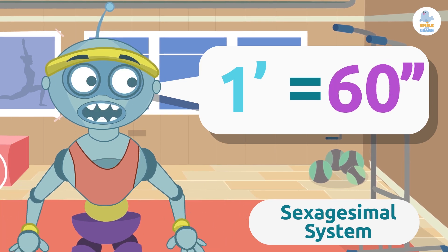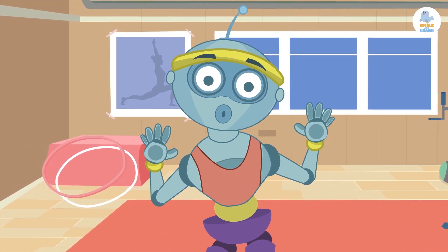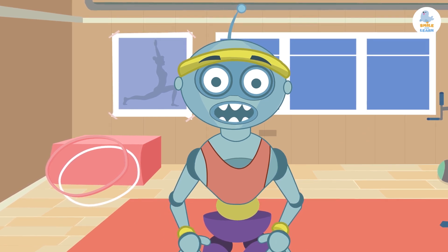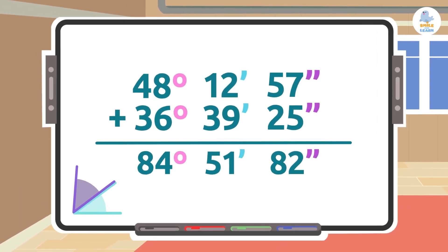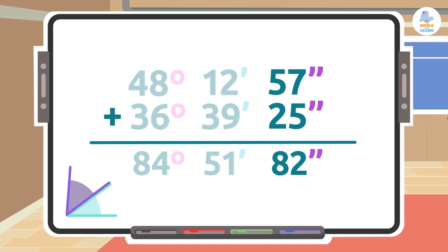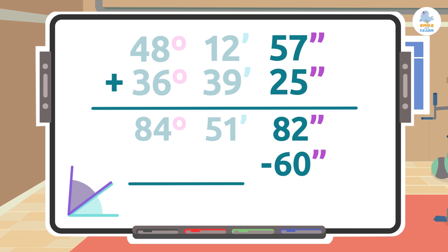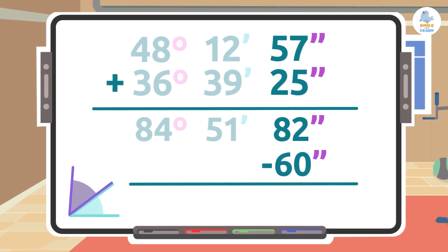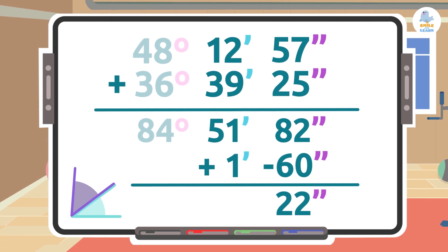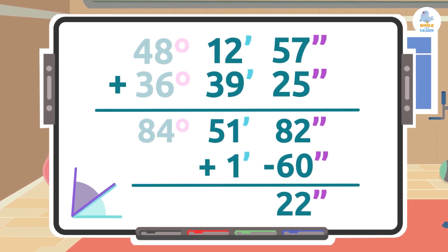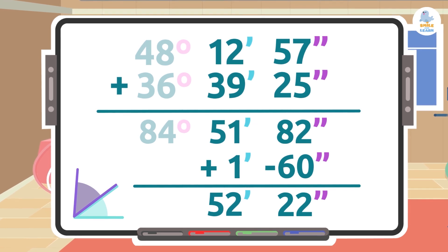How many seconds are in a minute? There are 60 seconds in one minute. So if the minutes or seconds are more than 59, we will have to subtract 60 minutes or seconds from them and add it to the unit to the left. Let's take a look at our sum — it is 82 seconds, which is more than 60, meaning it is more than one minute. What we have to do is subtract 60 seconds from the 82 seconds and move one minute to the minutes column. We subtract 60 from 82 and add the 60 seconds to 51 minutes, giving a total of 52 minutes.